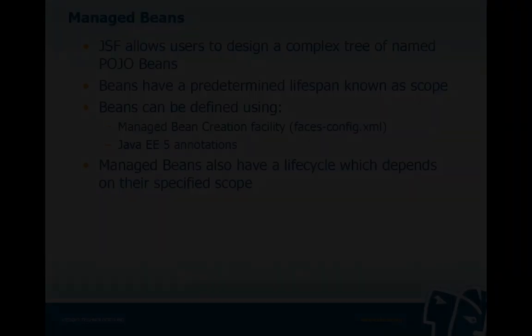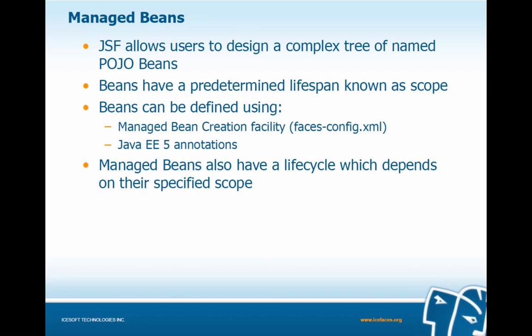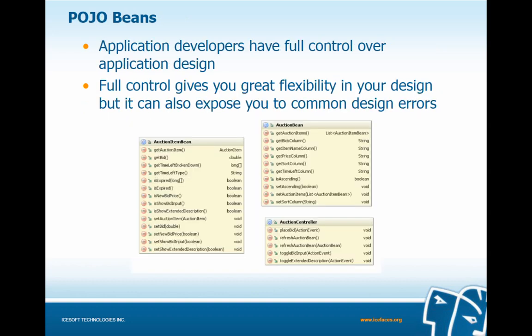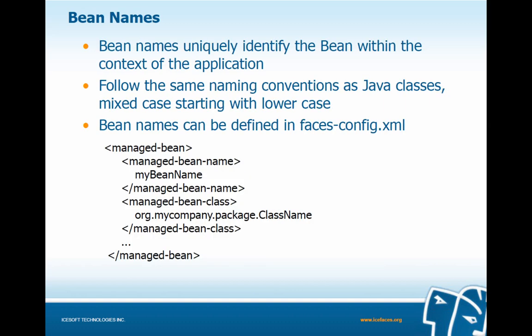JSF Managed Beans. JSF allows users to design a complex tree of named plain old Java object beans. Beans have a predetermined lifespan known as scope and can be defined in one of two ways: using the Managed Bean creation facility by adding a Managed Bean definition to our faces-config file, or through the use of Java EE 5 annotations available in JSF 2. Managed Beans also have a life cycle which depends on their specified scope. Bean names uniquely identify the bean within the context of the application.